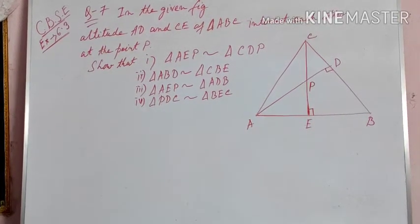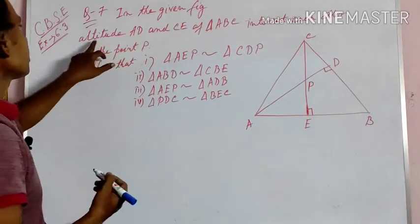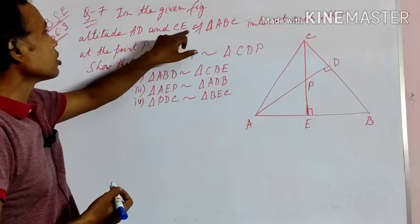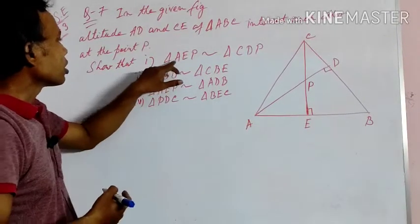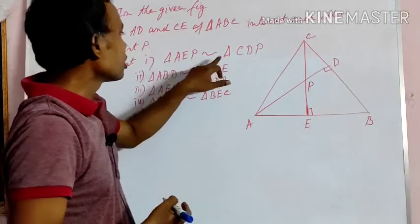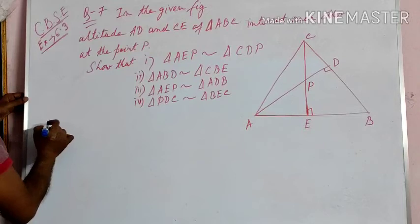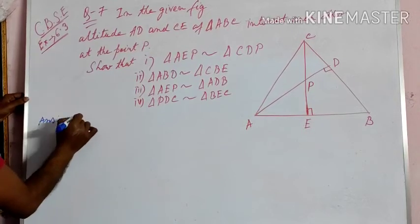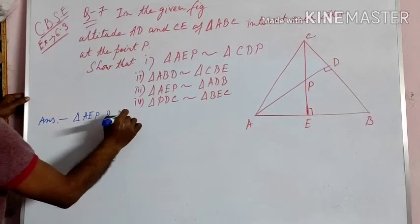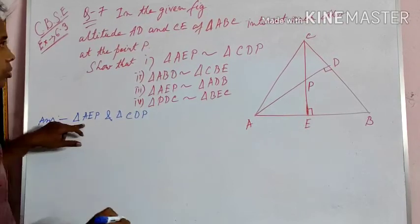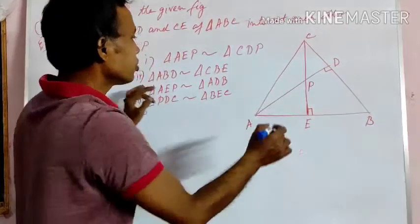CBSE Class 10, Exercise 6.3, Question 7. In the given figure, altitudes AD and CE of triangle ABC intersect each other at point P. We need to show that triangle AEP is similar to triangle CDP. Let us solve it.